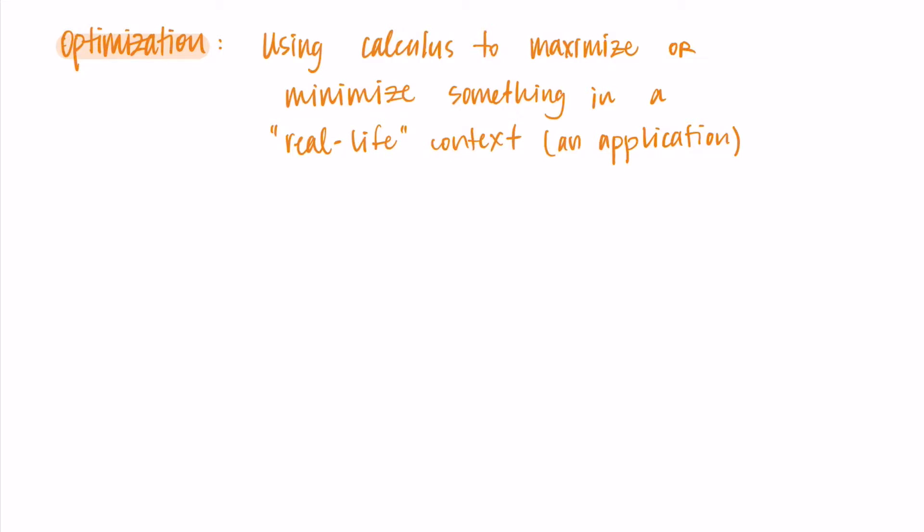So what might we be trying to optimize? If we were in a business context, we might be trying to optimize our spending and our money flow, so we might be trying to maximize profit and minimize cost. Or I like to focus on a more personal type situation where we might be trying to maximize the space available to us while minimizing the amount of materials we need.